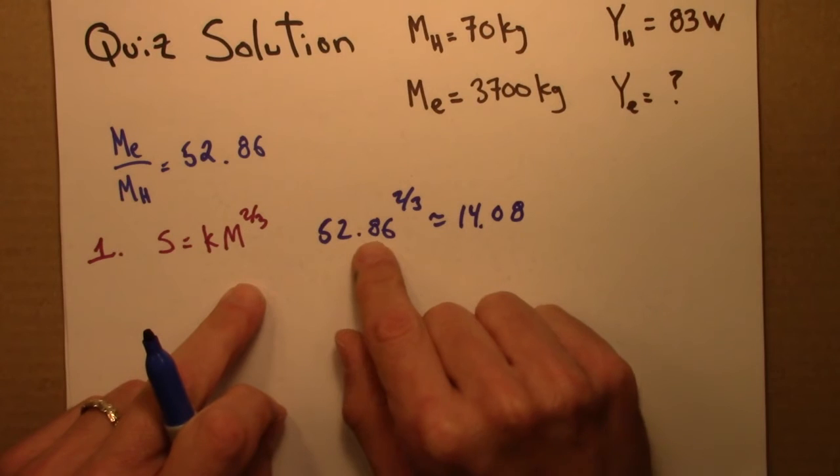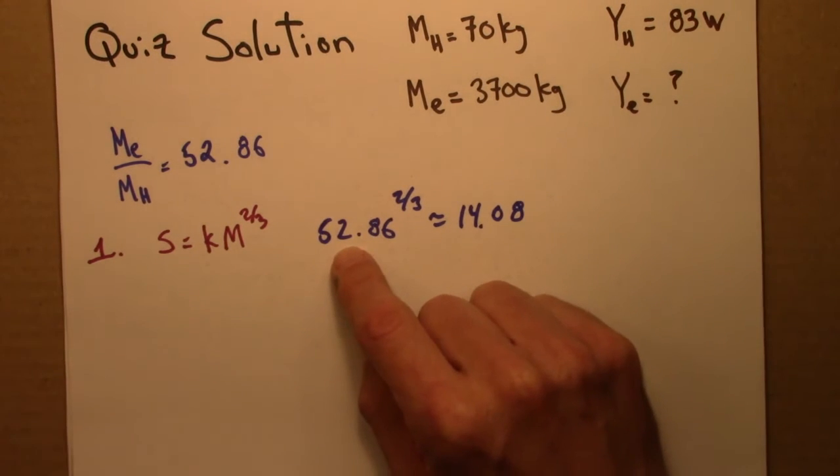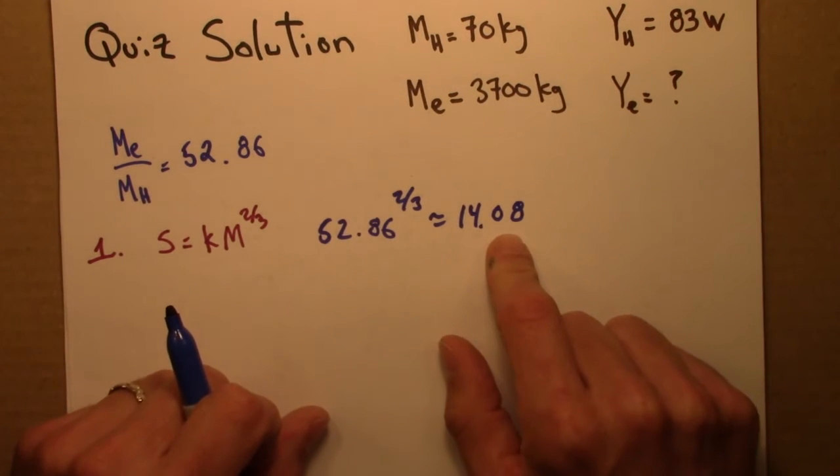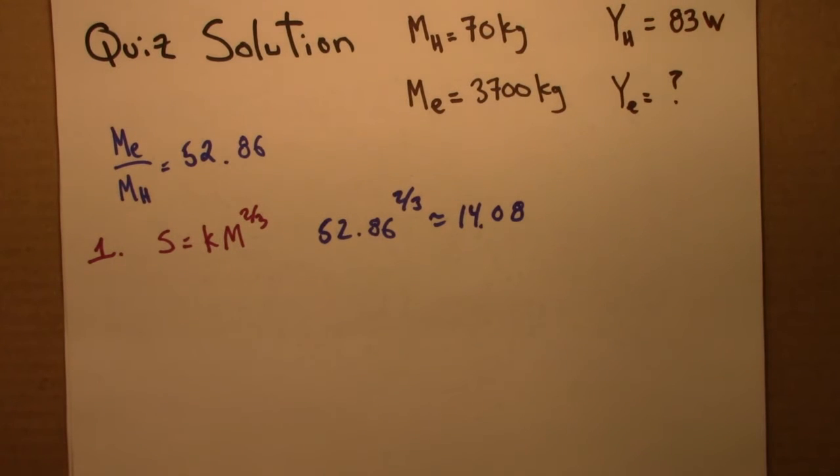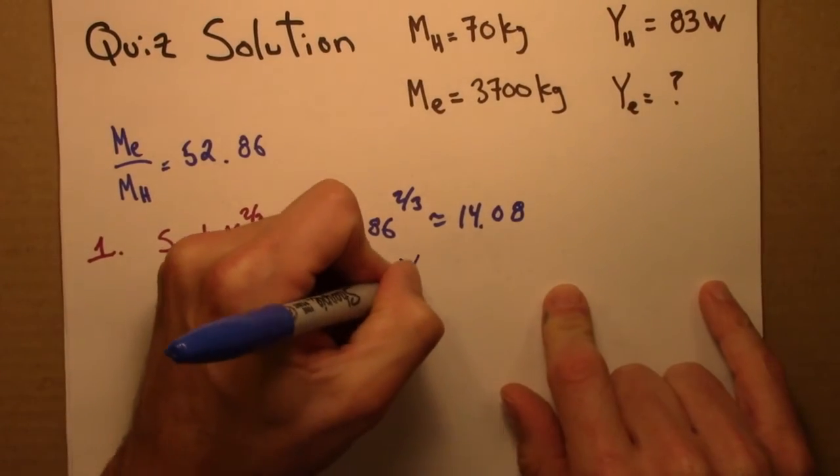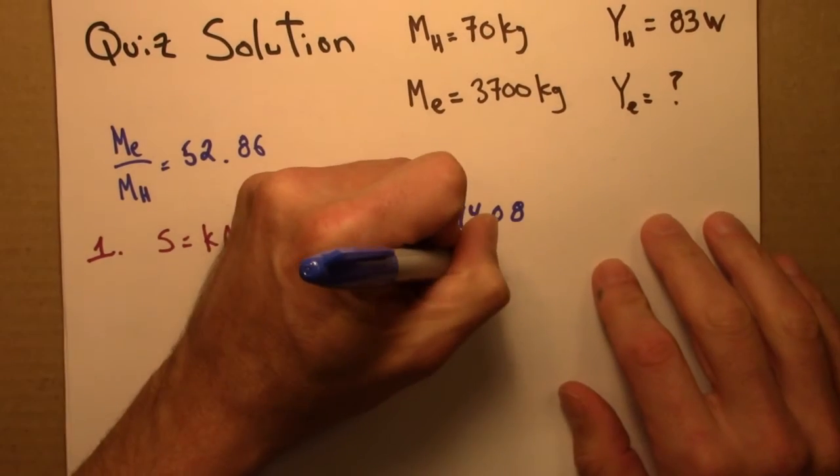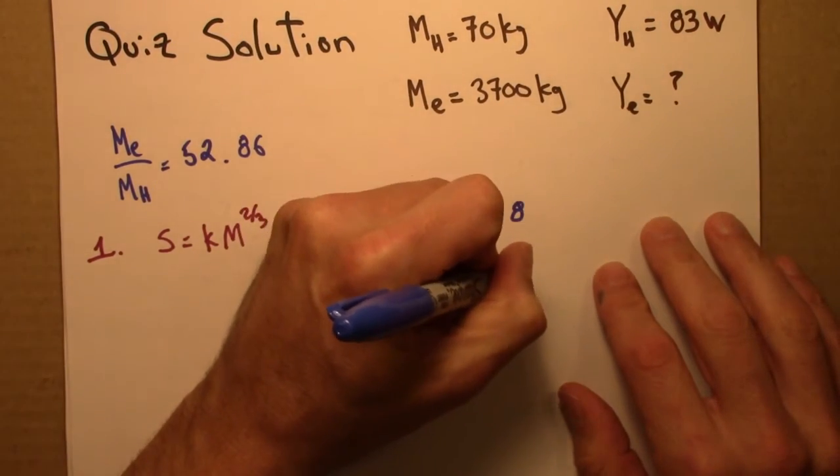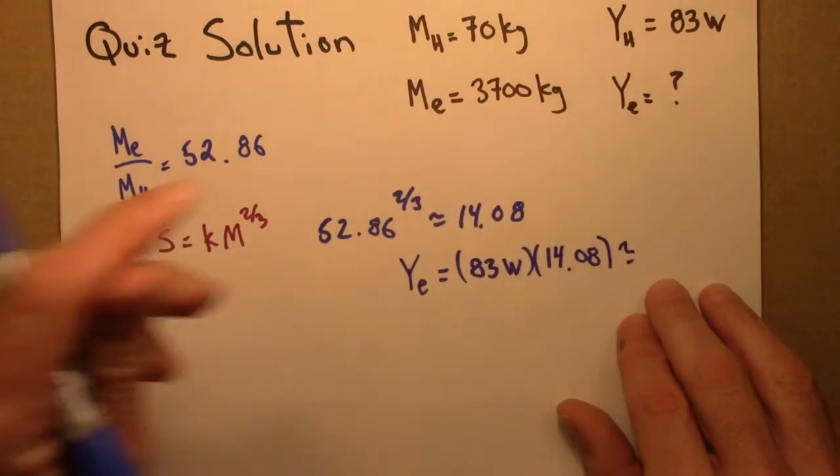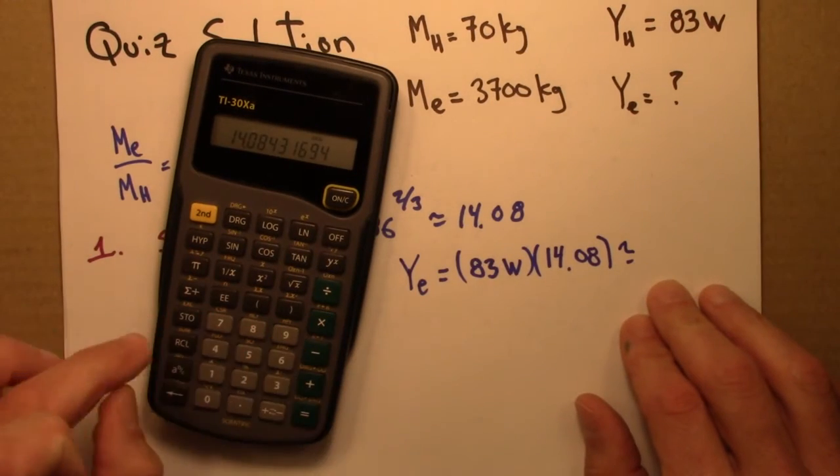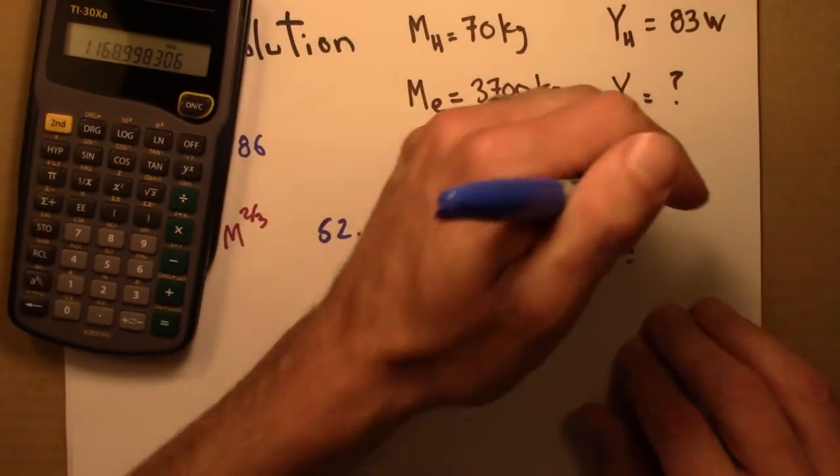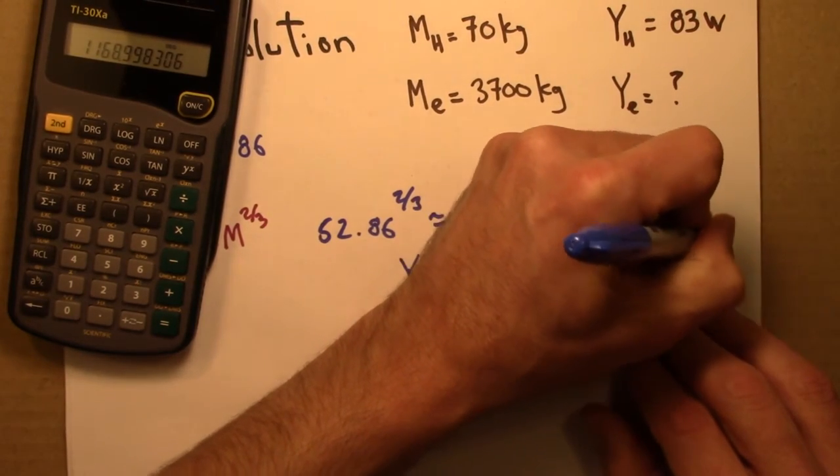So mass goes up by 52.86. It's that many times more massive. The metabolic rate only goes up by 14.08 times. So that would give me, for the metabolic rate of the elephant, YE is YH, 83 watts times 14.08, which is around, let's see, 1169. 1169, and that's watts.